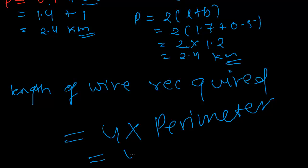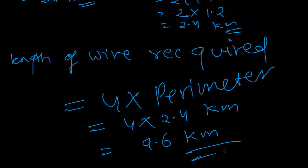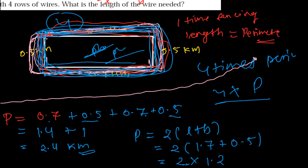Our perimeter is 2.4 kilometers, and four times 2.4 gives 9.6 kilometers. So we need a 9.6 kilometer lengthy wire to fence this rectangular piece of land.